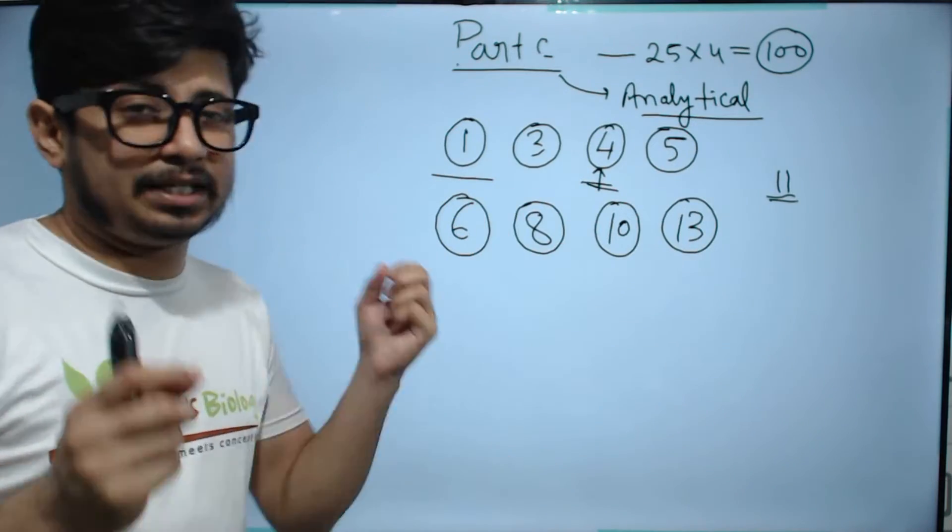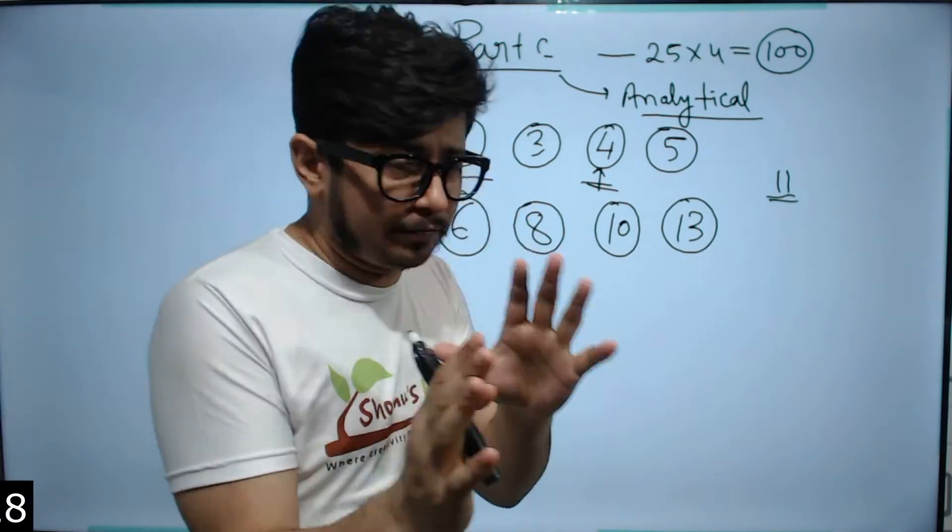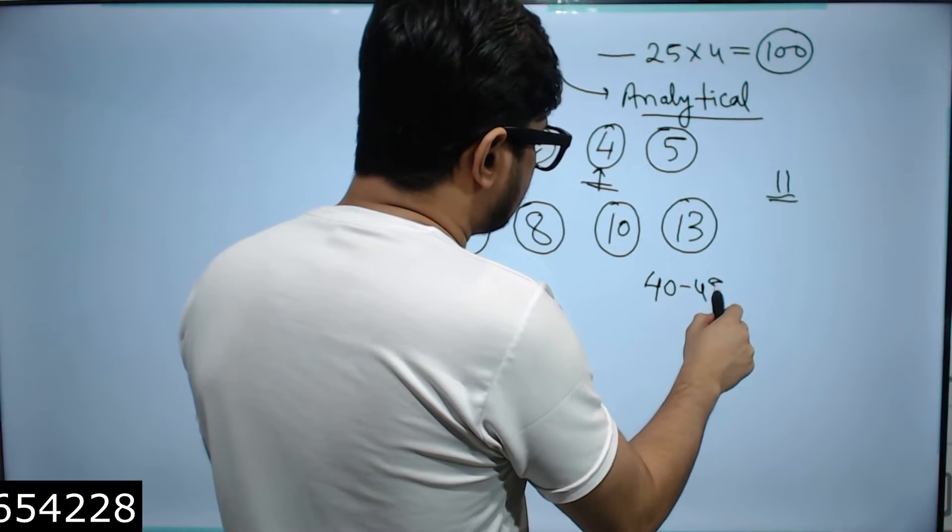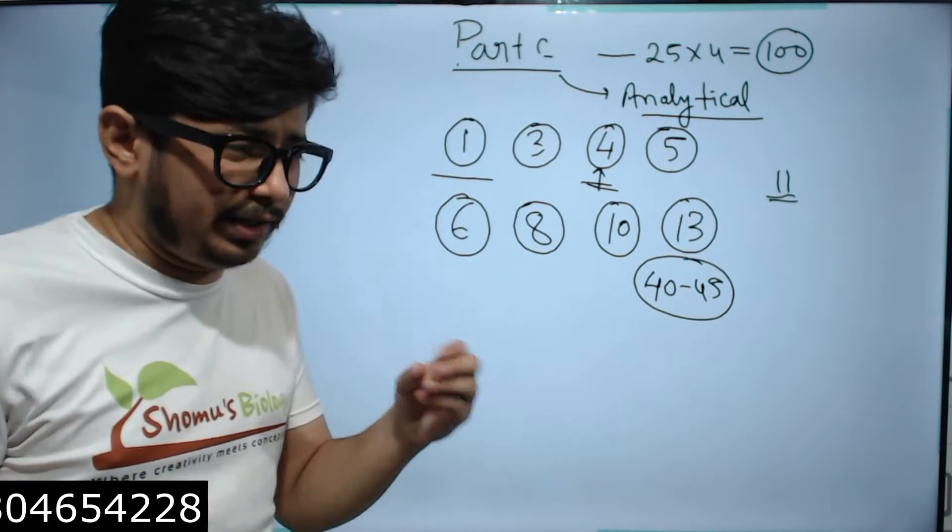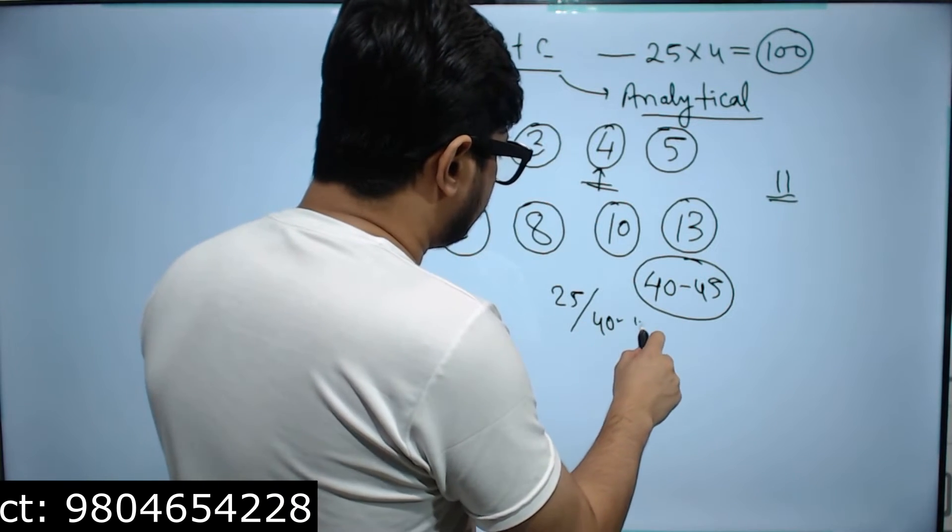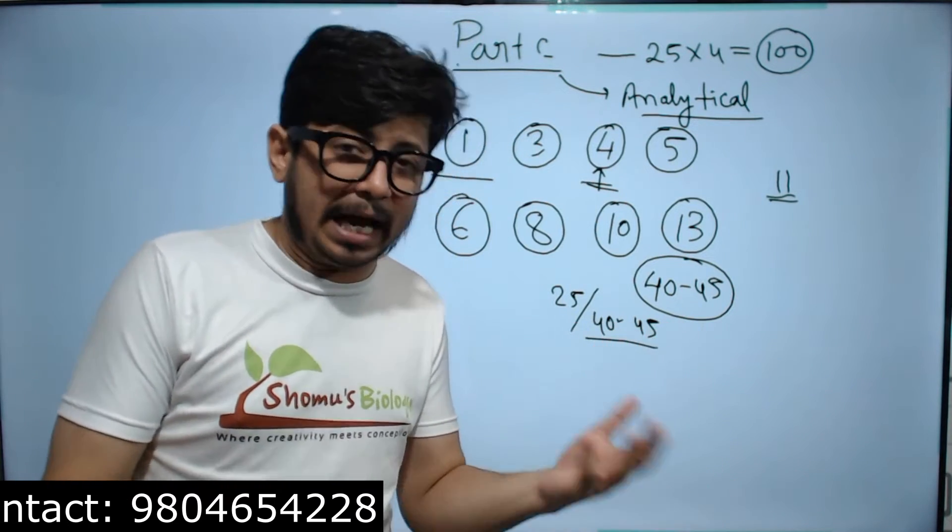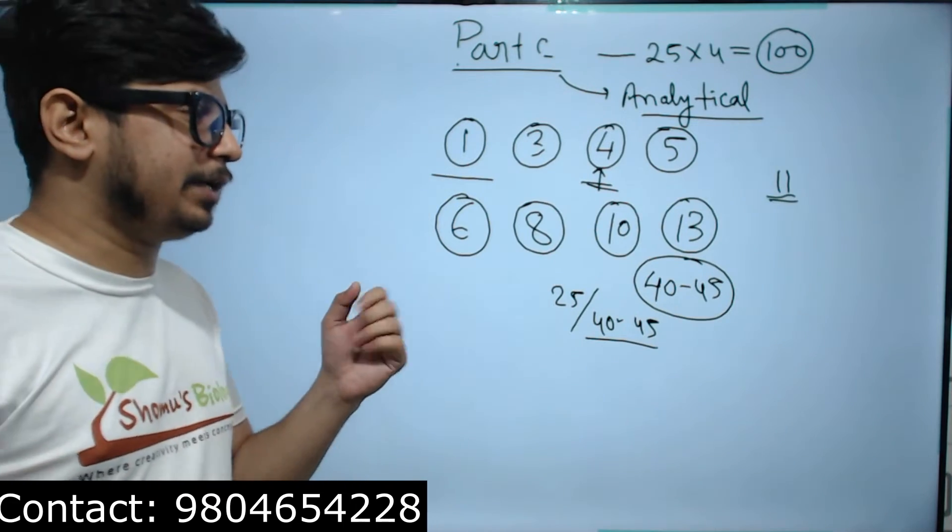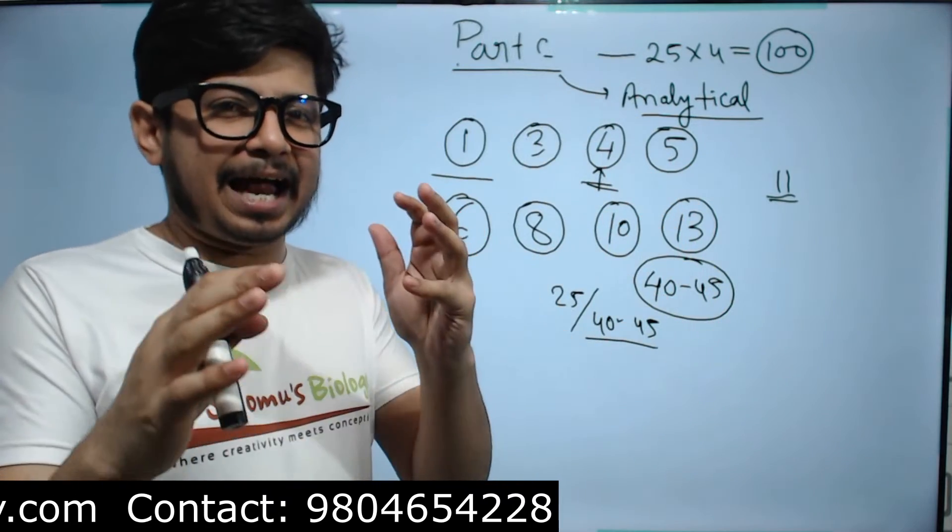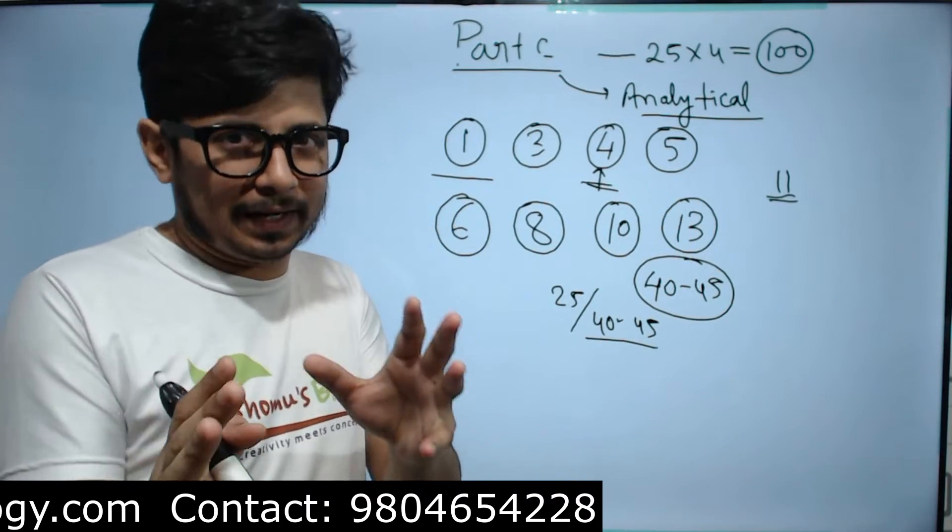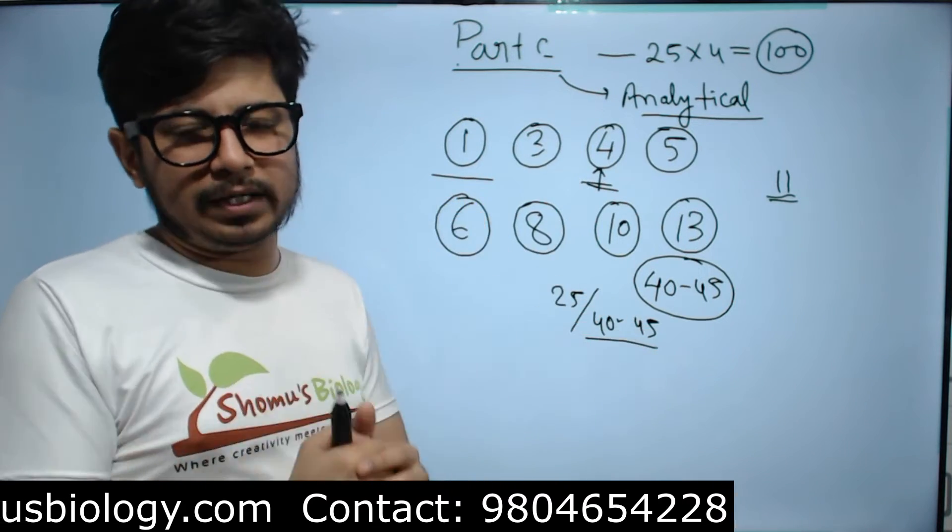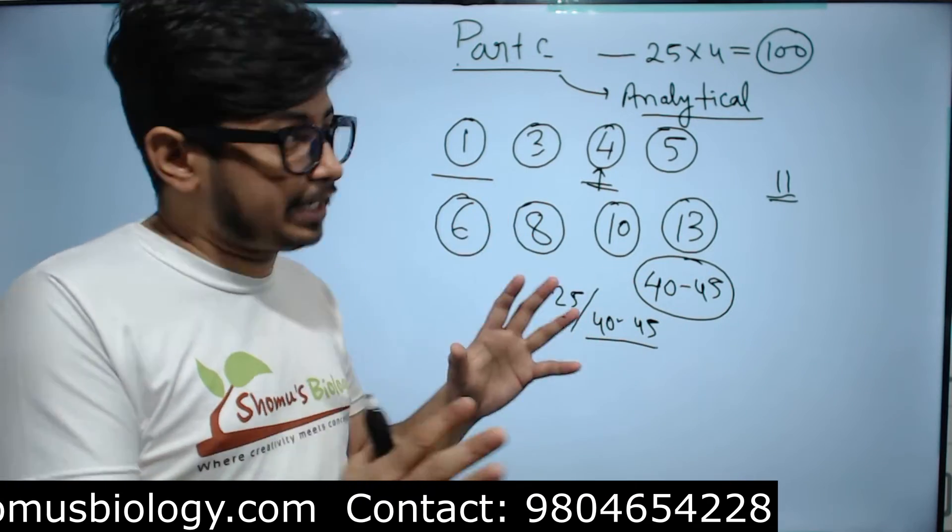If you prepare 8 or 9 units particularly for Part C, you are going to get approximately 40 to 45 questions. And this bunch of questions I think is good if you are confident to answer them, because you only need to answer 25 out of this 40 to 45, and I think that's quite achievable. I believe that, and if you join us for Shomu's Biology online coaching program, I will make you believe in this and I'll help you to prepare to that extent.